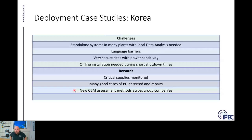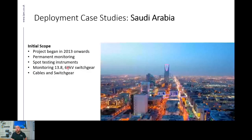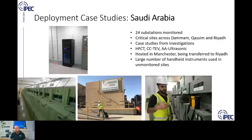Saudi Arabia — we began working there from 2013 onwards. Initially, a lot of the application was spot testing with handheld portable instrumentation. More recently, permanent monitoring technology has been deployed, monitoring 13.8 kV and 69 kV, primarily focused on switchgear, which is the customer's main concern. However, because a monitoring system is already being installed for switchgear, it's not too much to add cable monitoring as well. At the moment, we have over 24 substations with our ASM monitoring systems.